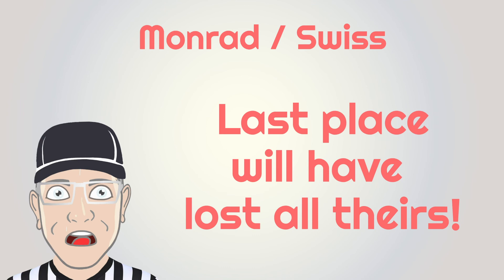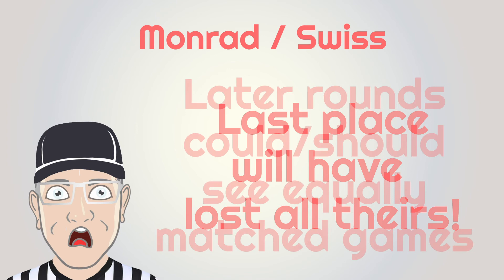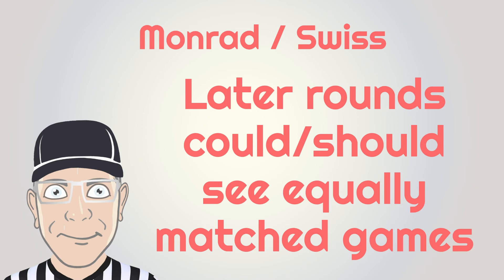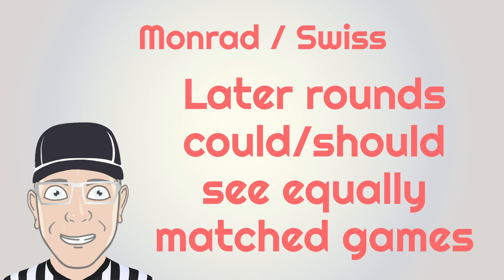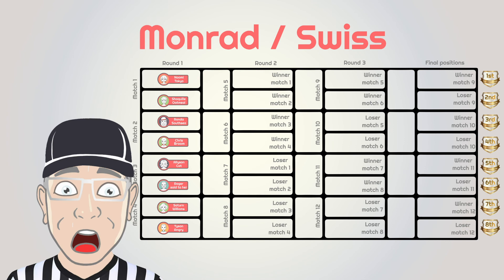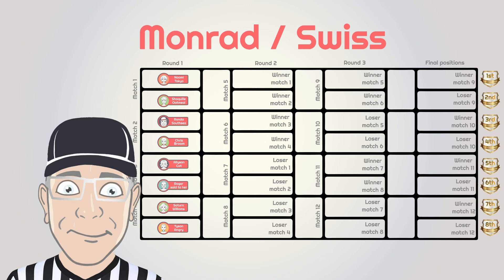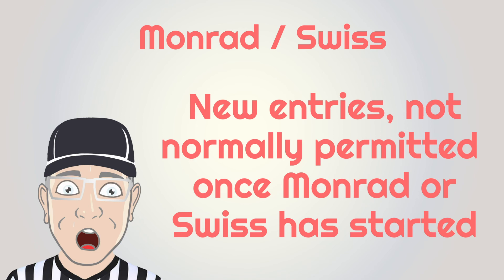Another inherent benefit is that players in later rounds face opponents of more equal ability — in the second round, winners play winners and losers play losers. When initially setting up the Monrad, players' names can be randomly entered or a seeding process can be used to prevent better players meeting early. Once the tournament has started, new players cannot normally be entered. Anyone injured or unable to play can significantly disrupt the draw — recent Monrad squash tournaments I entered saw later games notably affected by injuries and fatigue.